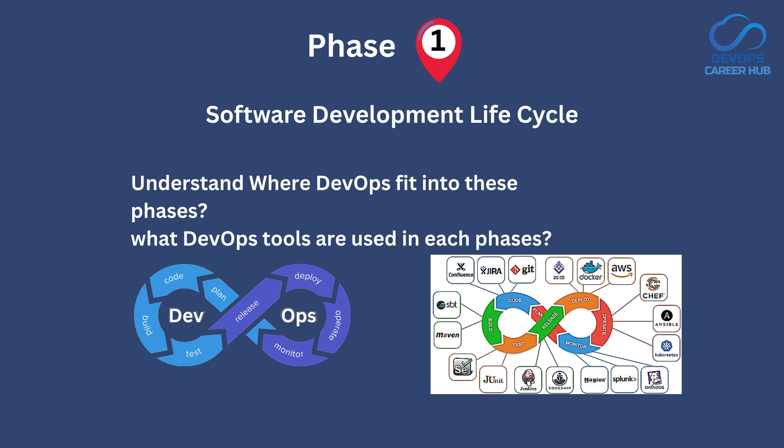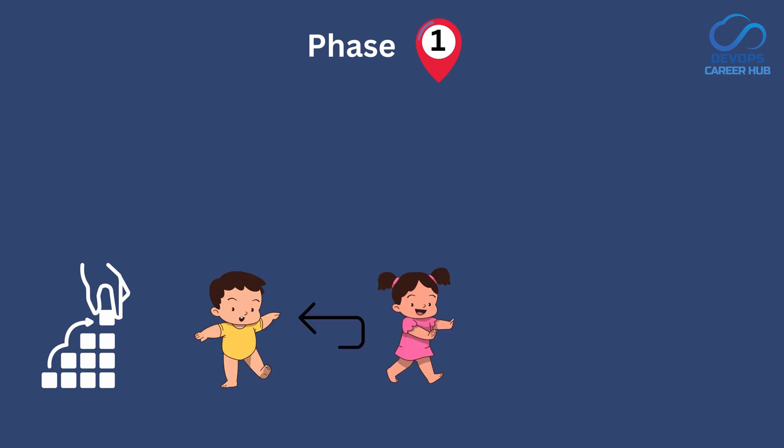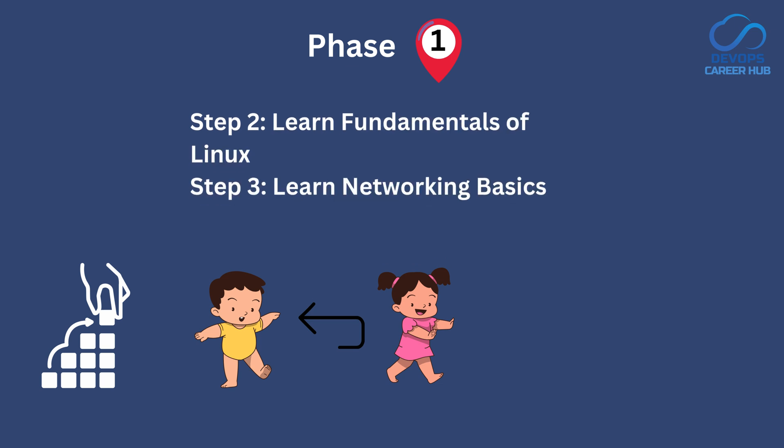After understanding the SDLC, you can move on to the next step. Steps 2 and 3 are like a DevOps engineer's foundation — think of it like learning to walk before you run. It is very important as a DevOps engineer to know these. Step 2 is to learn the fundamentals of Linux and step 3 is networking concepts.